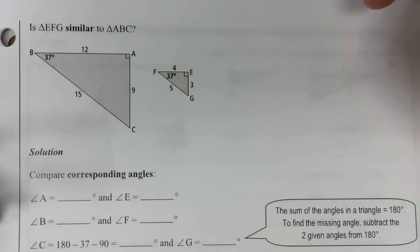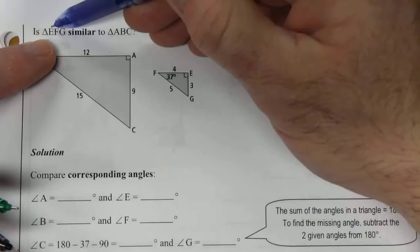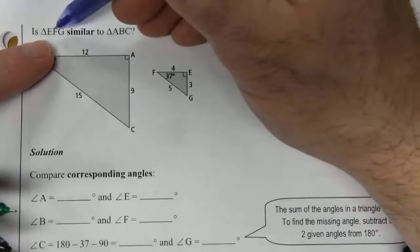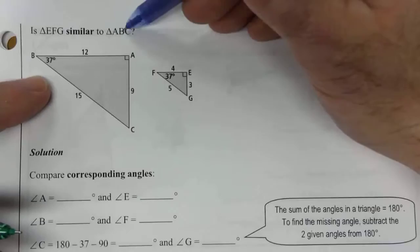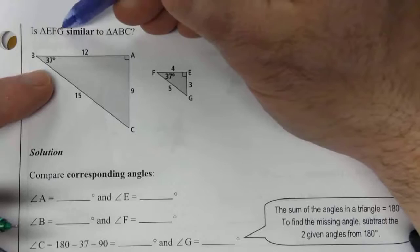Now notice the E is the square corner, that's the first letter listed. A also has a square corner and it's the first angle listed. F is the 37 degrees and is the middle one. The middle one over here is the 37 degrees B. And then G and C are the last ones. So they're written in the same order to help identify the similarity of the two triangles.